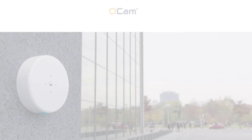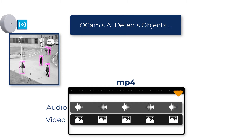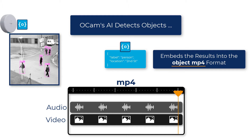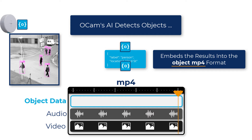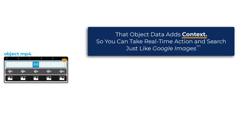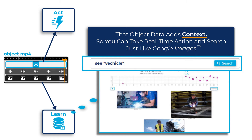That's why we created OCAM, the first AI camera to automatically discover and add context to video and audio streams. OCAM runs sophisticated AI that detects objects and patterns and then embeds the results into the object mp4 format. That object data is the context for what's happening in that stream, and it allows for real-time action as well as a private Google Images type feature.